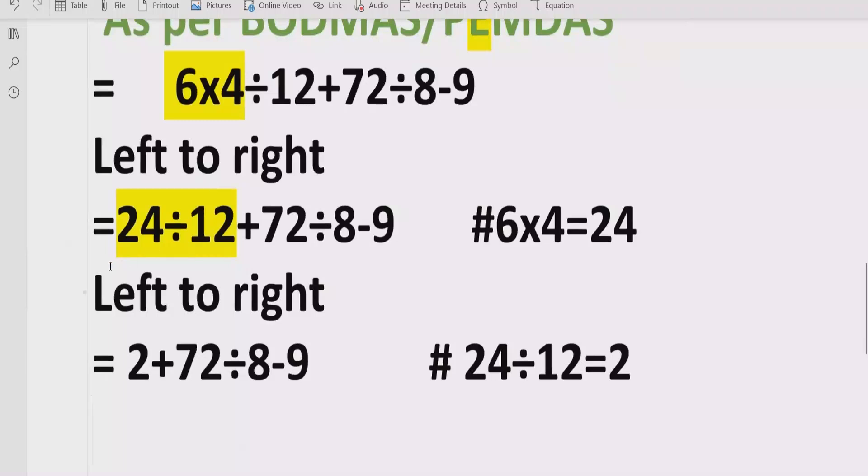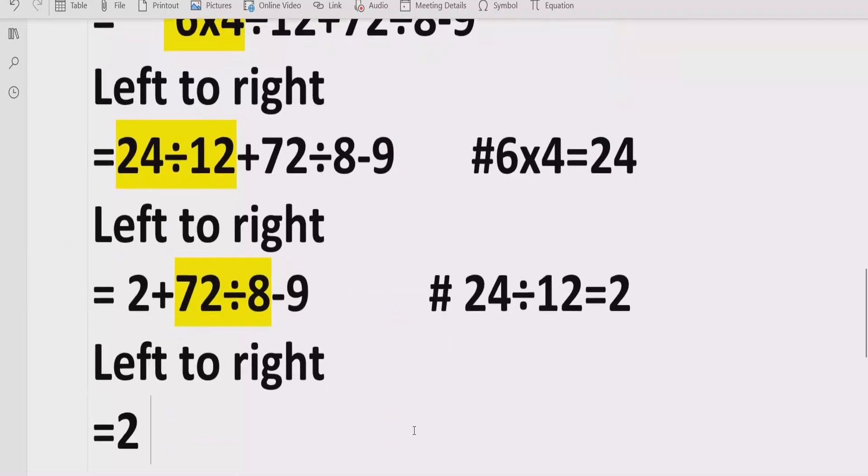Now again we have to go left to right and see here we have the addition. So now we will not solve this. First we have to solve all division or multiplication. So here we have the division. Again we will write like 2 and plus 72 divided by 8 minus 9.